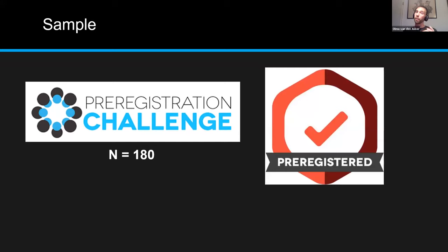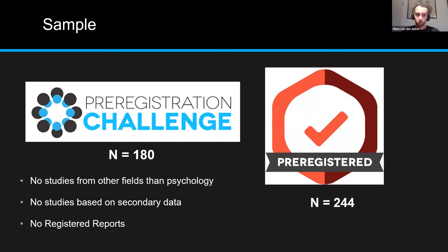We also used papers with pre-registration badges — an initiative by the Center for Open Science where papers that have at least one pre-registered study can receive a badge. There were 244 of those. We did exclude some: no studies from other fields outside psychology, no studies based on secondary data because pre-registering those is more complex, and no registered reports because that's a slightly different way of pre-registering.